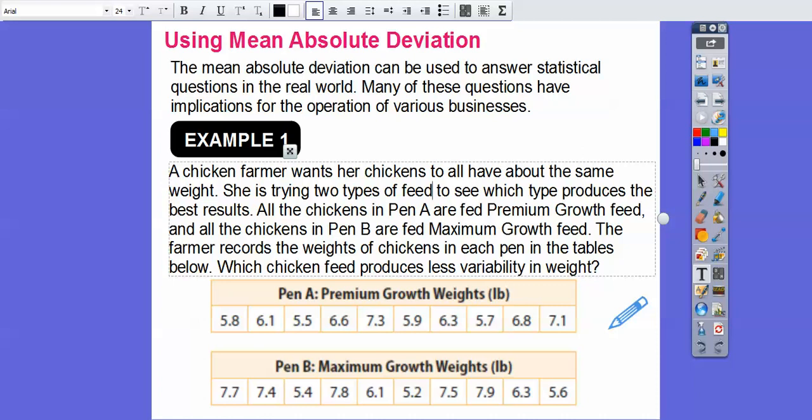All the chickens in pen B are fed maximum growth feed. Those are made up names, I'm pretty sure. Maybe not. The farmer records the weights of the chickens in each pen in the tables below. Which chicken feed produces less variability in weight?